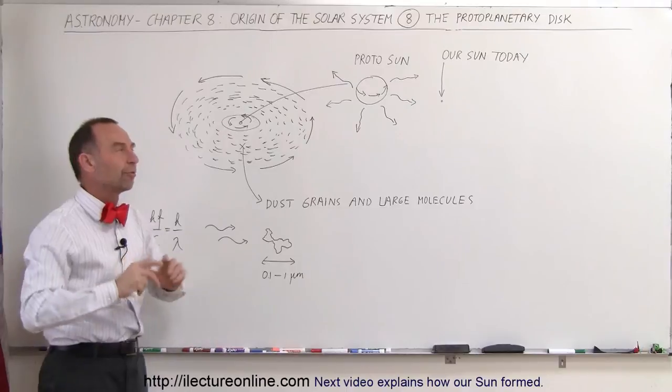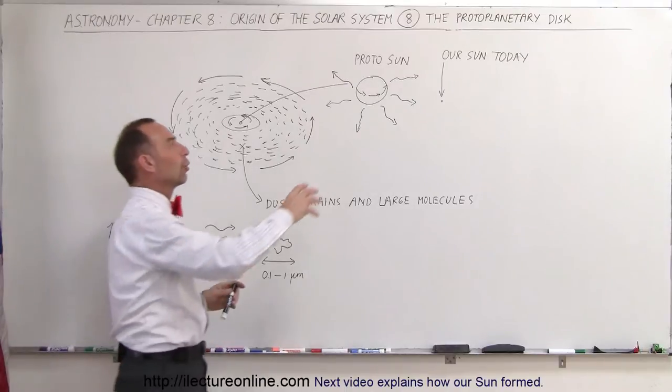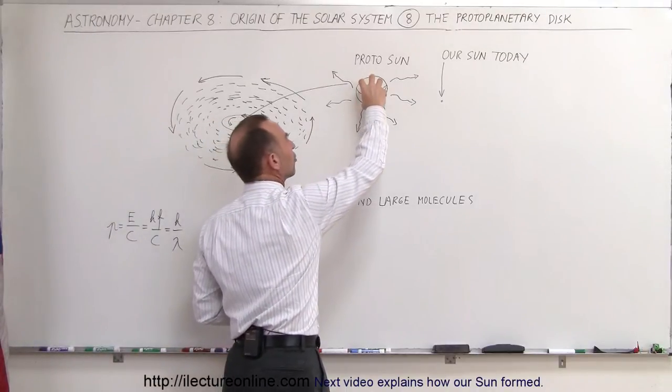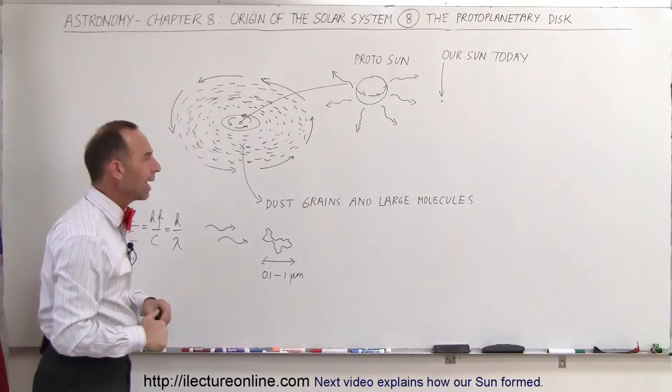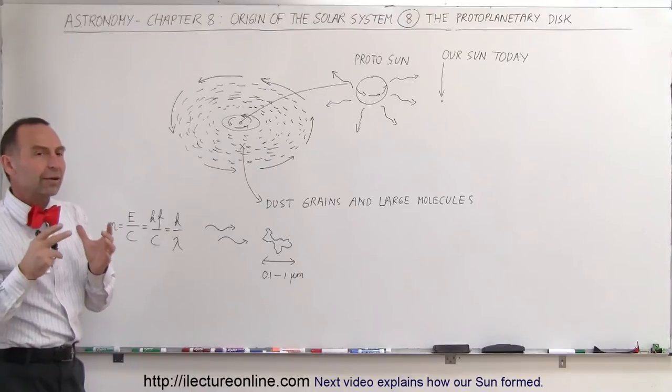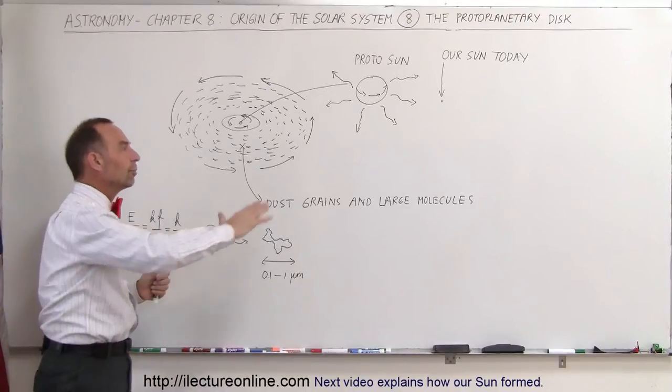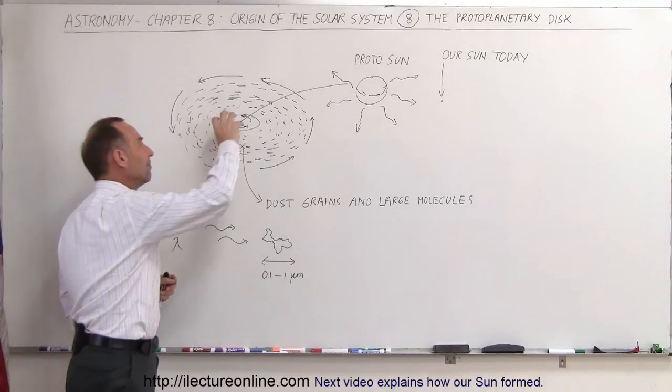Eventually, of course, over time the proto-Sun would continue to shrink down and eventually become the size it is today. And we'll talk a little bit more about that. But the protoplanetary disc is where the material began to get separated.